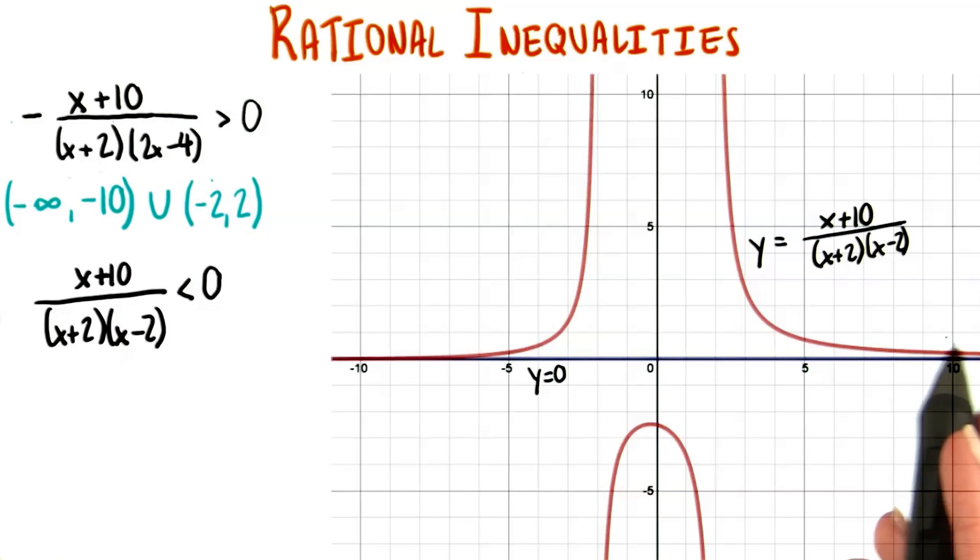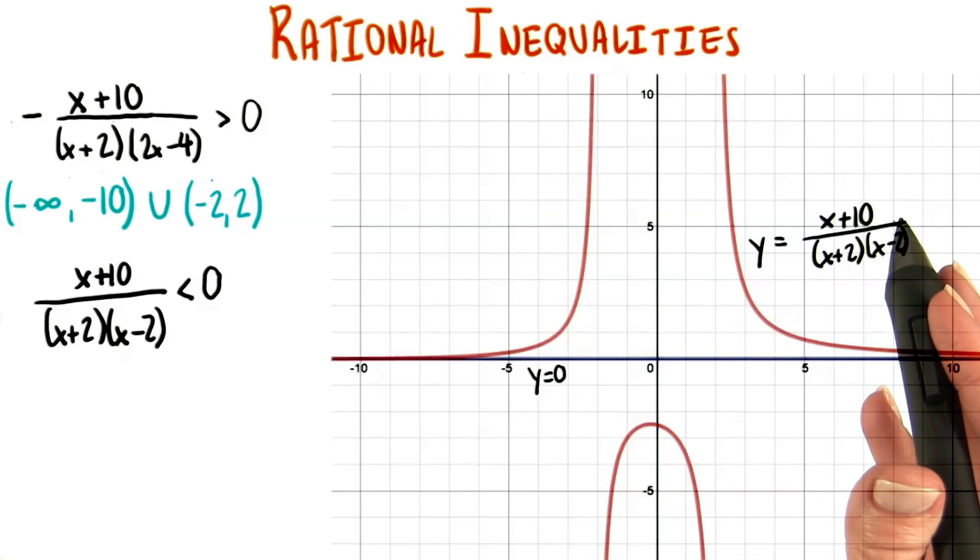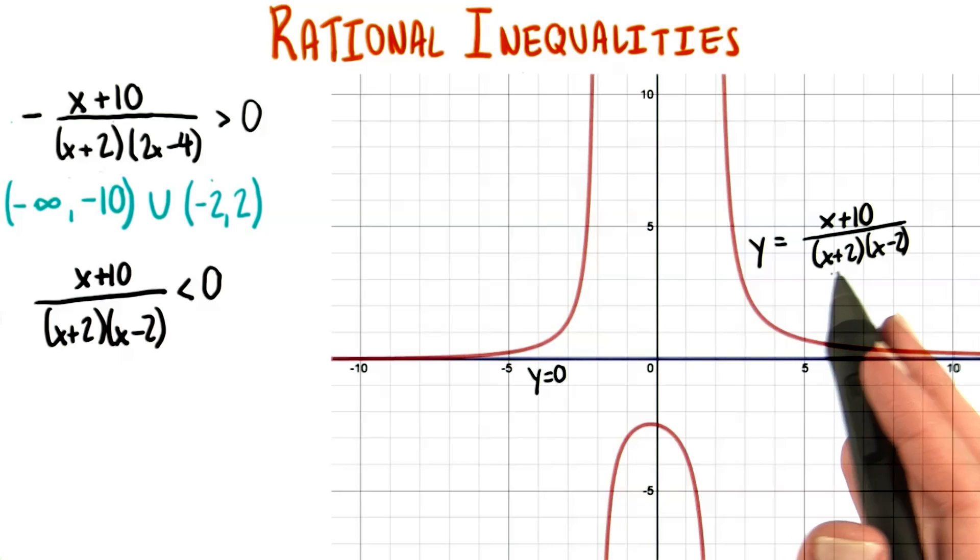So now, as you might have guessed, I've graphed the lines y equals x plus 10 over the quantity x plus 2 times the quantity x minus 2, and of course our x axis.